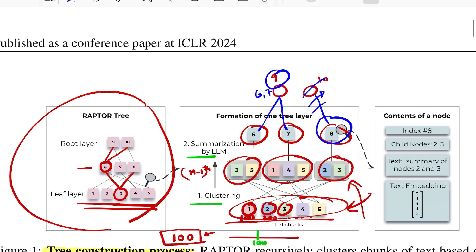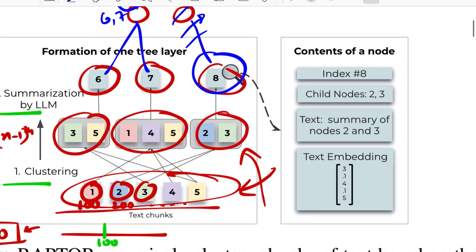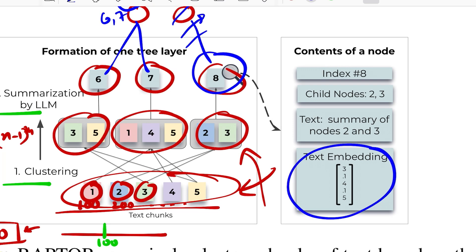So that's the entire idea of how the tree is constructed. Now what all information do we have in a node? They store the embedding of each node. Since every node is nothing but essentially a text piece, whether that's the most granular retrieval unit or it's a little more coarse, the idea is to have text over there.